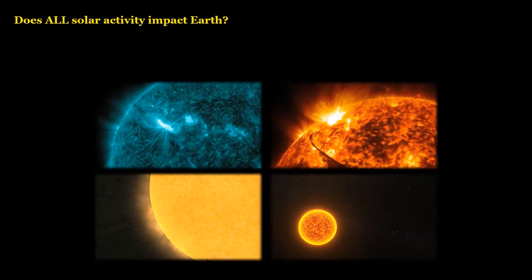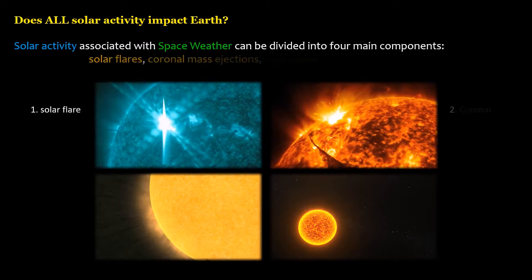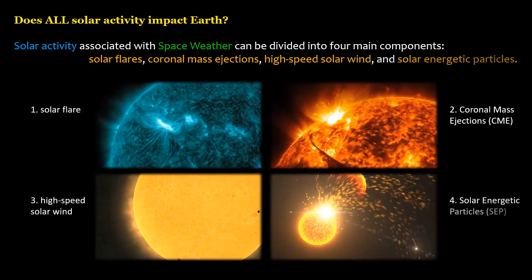Does all solar activity impact Earth? Solar activity associated with space weather can be divided into four main components: solar flares, coronal mass ejections, high-speed solar wind, and solar energetic particles.